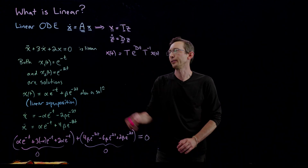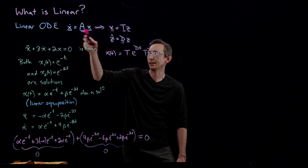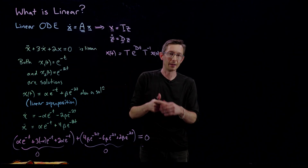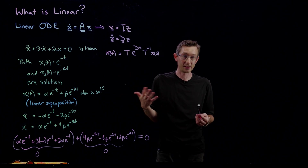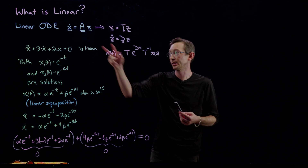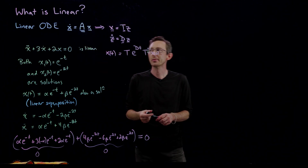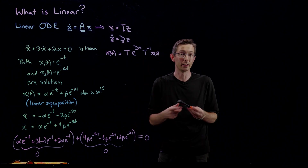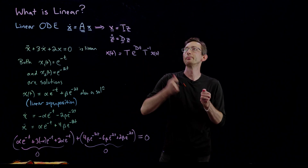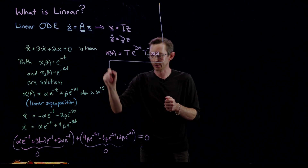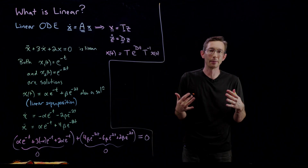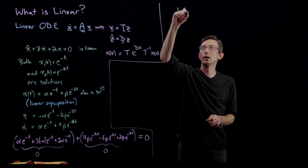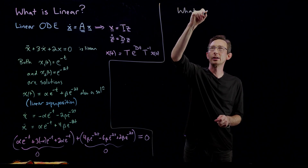The same reasoning applies to these matrix systems: if I have two solutions, I can add them and still get a solution, because matrix multiplication is a linear operation. So let me now give you examples of what counts as a linear operation.